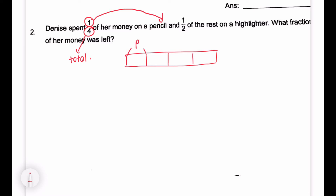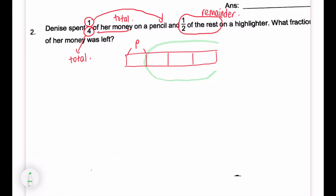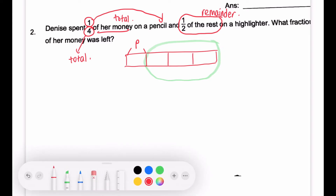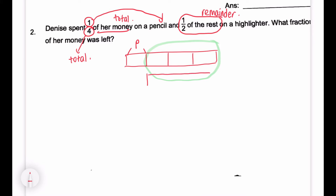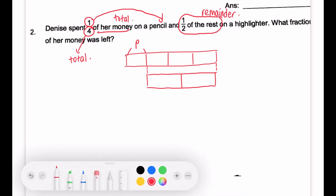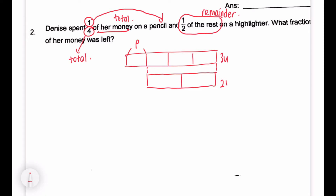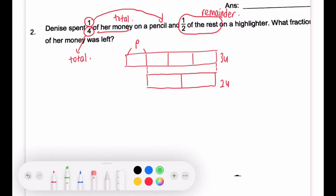Then she spent half of the rest. This phrase — half of the rest — this is a remainder concept. So let's take a look at the remainder first. We have three units here. She spent half, so let's do a drop-down. Imagine this is one whole new chunk again and she spent half. Observe these two parts: the one cut into three and the one cut into two — they are of equal portions.